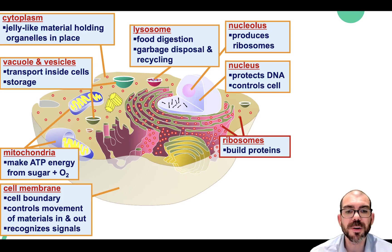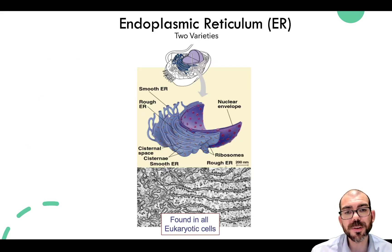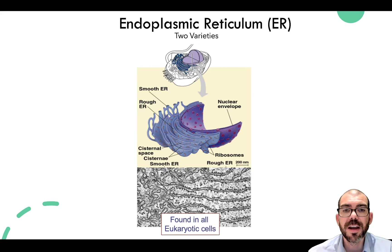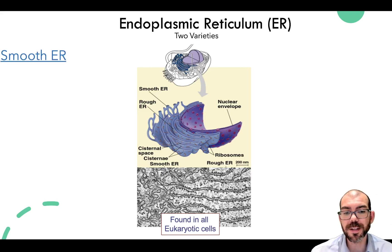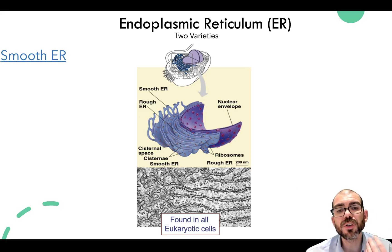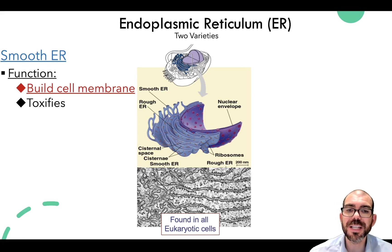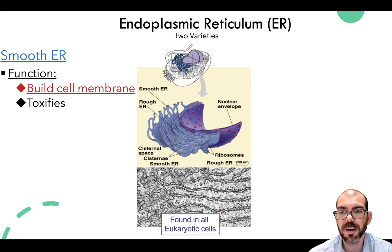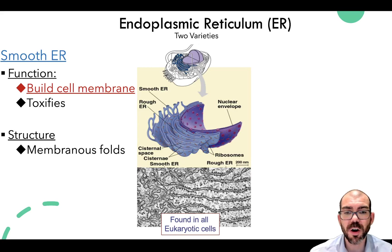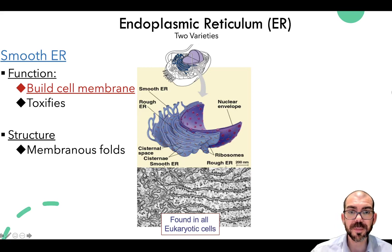The primary job of ribosomes is to build proteins. The endoplasmic reticulum is our next organelle involved in protein production, and it's found in two different varieties inside cells — frequently abbreviated as ER. It is found in all eukaryotic cells. One variety is smooth ER. The primary function of smooth ER is to build cell membrane, and it also detoxifies the cell. If the cell is filled with toxins, the smooth ER breaks that down. Its structure is membranous folds, and it appears smooth — kind of like a coral reef under the microscope.